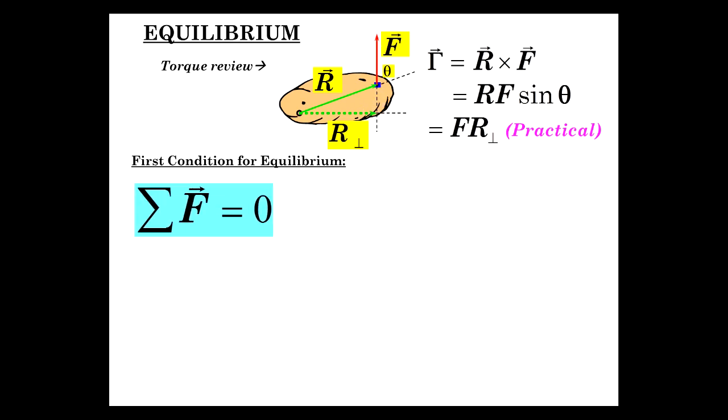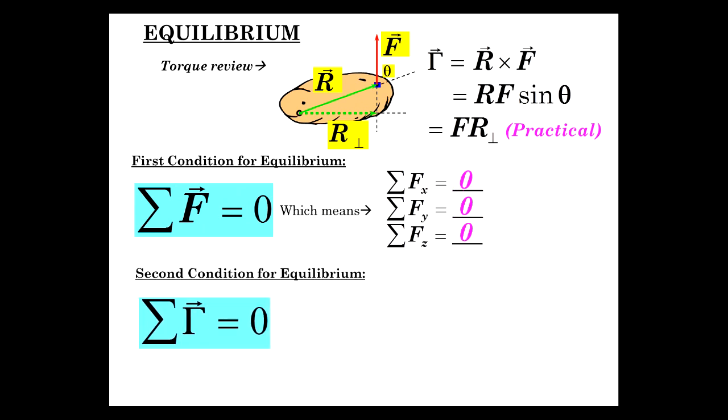Now the first condition for equilibrium is making sure that there is no translational acceleration. Sum of F equals zero. And that means that's true in the X, the Y, and the Z. And then the second condition is the sum of torques equals zero about any given point in question. And if the sum of the torques is zero, it just means that the counterclockwise and clockwise torques are equal. Or we can also say that the rate of change of angular momentum is zero, which of course is a definition of torque.